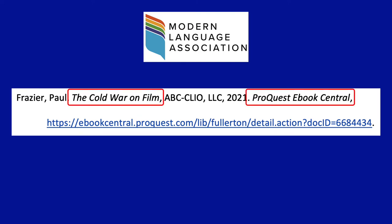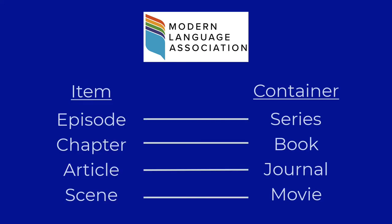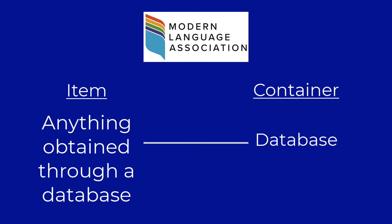Here, we see that the book itself, The Cold War on Film, is a container, as well as the database, ProQuest eBook Central, in which it was found. A container for a television episode would be the entire series. For a book chapter, the container would be the entire book. In the case of articles, the container would be the journal in which the article appeared. Items found in electronic databases will also have the database name listed as a container.